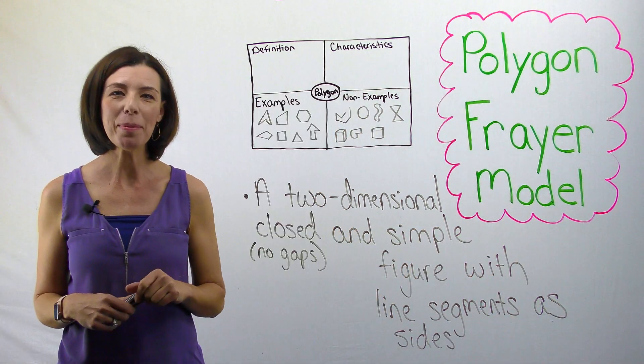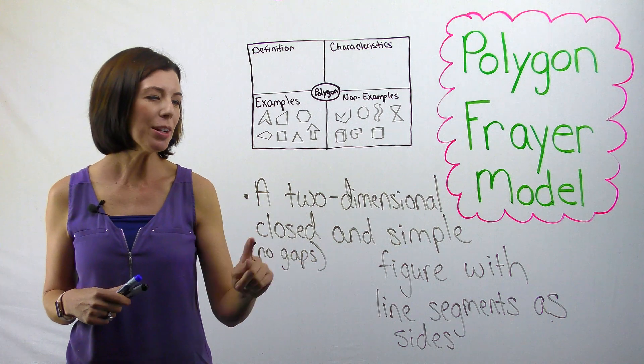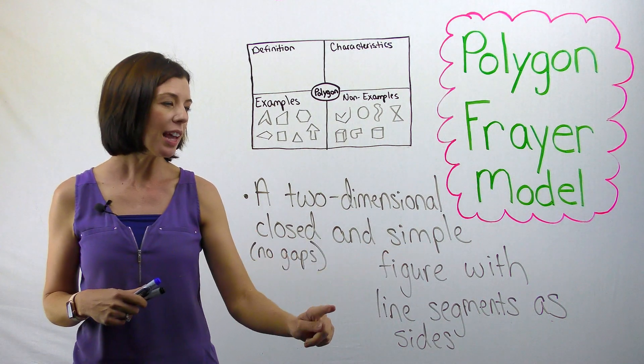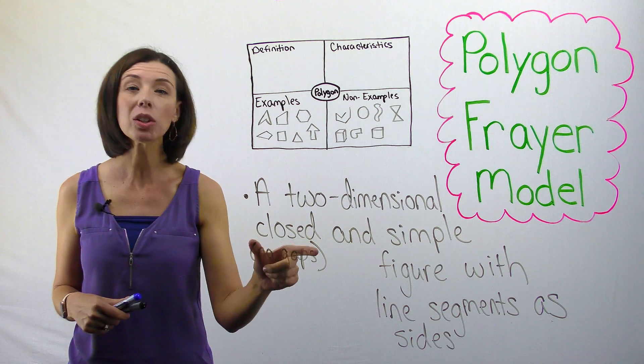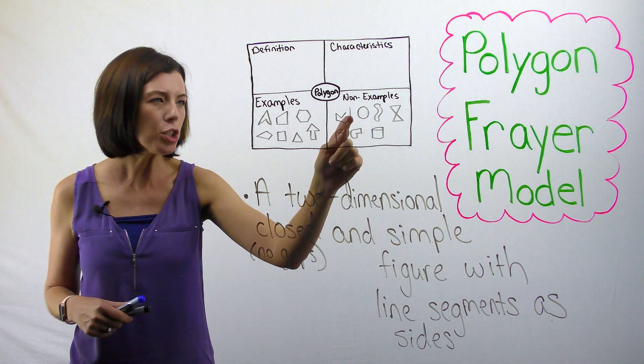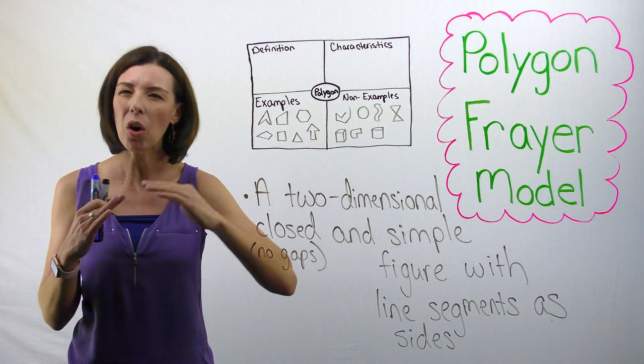Check your definition with mine. I said, a two-dimensional closed and simple figure with line segments as sides. Again, closed meaning no gaps. This shape right here is not closed. They all don't touch.